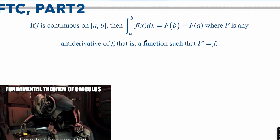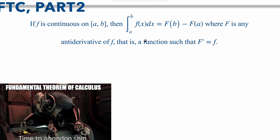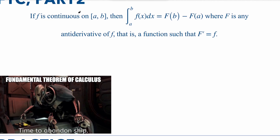Now, the fundamental theorem of calculus part 2. This states that if f is continuous, then you take the integral of the function — it's going to be the antiderivative evaluated by inputting b and subtracting by inputting a. f is going to be the antiderivative, so that if you were to take the derivative of the antiderivative, you would have gotten the original function.